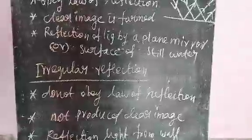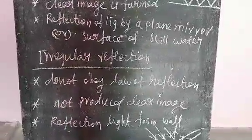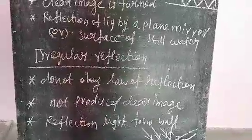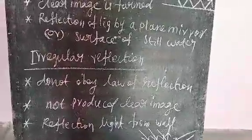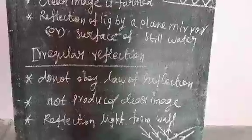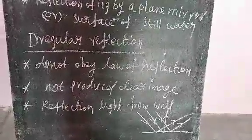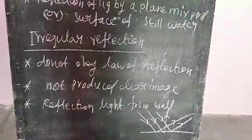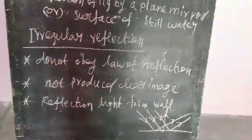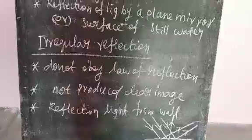Irregular reflection: when a beam of light rays falls on a rough, irregular surface, it gets reflected. The reflected rays are not parallel to each other, do not obey the law of reflection, and do not produce a clear image. Example: reflection of light from a wall is an irregular reflection.